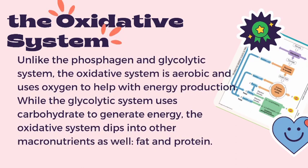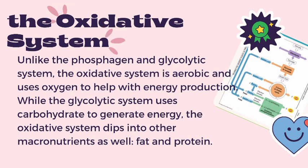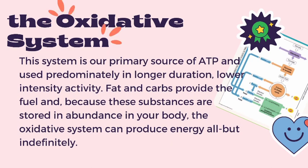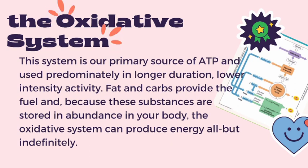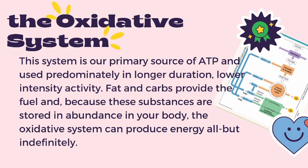Unlike the Phosphagen and glycolytic systems, the oxidative system is aerobic and uses oxygen to help with energy production. While the glycolytic system uses carbohydrates to generate energy, the oxidative system dips into the other macronutrients as well, which we call fat and protein. Because these substances are stored in abundance in our body, the oxidative system can produce energy almost indefinitely.